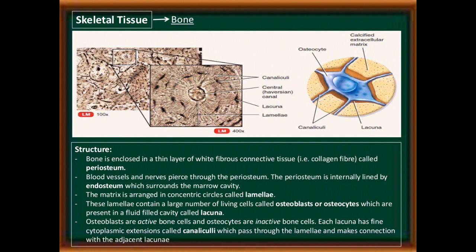These lamellae contain a large number of living cells called osteoblasts or osteocytes, present in fluid-filled cavities called lacunae. Osteoblasts are active bone cells and osteocytes are inactive bone cells. Each lacuna has fine cytoplasmic extensions called canaliculi, which pass through the lamellae and make connections with adjacent lacunae.